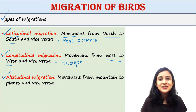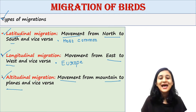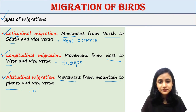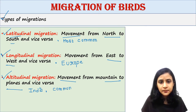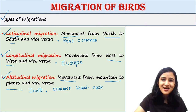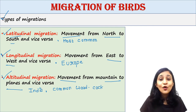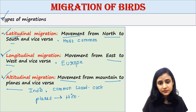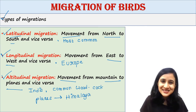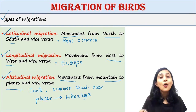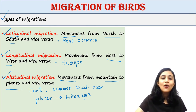The third type is altitudinal migration. Altitude means height, so altitudinal migration means the movement from mountains to plains and plains to mountains. For example, here in India, many birds such as the common woodcock migrate from the plains to the slopes of the Himalayas during summer, and they return to the plains at the commencement of winter. This is an example of altitudinal migration.